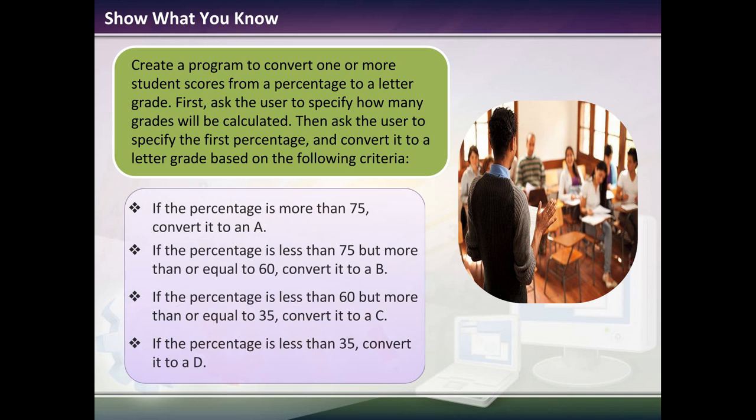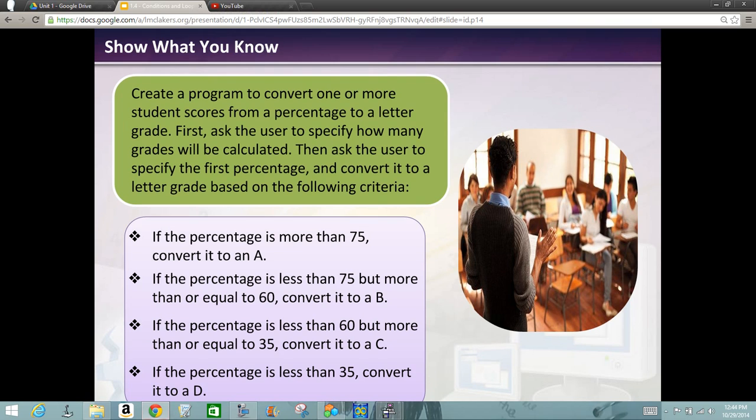First, ask the user to specify how many grades will be calculated. Then ask the user to specify the range or the first percentage and then convert it to the letter grade for the following criteria. Here's the criteria. They want us to say that if it's 75% or more, convert it to an A. If the percentage is more than or equal to 60, convert it to B. If the percentage is between 60 and 35, convert it to a C. And if it's 35 or lower, convert it to a D.